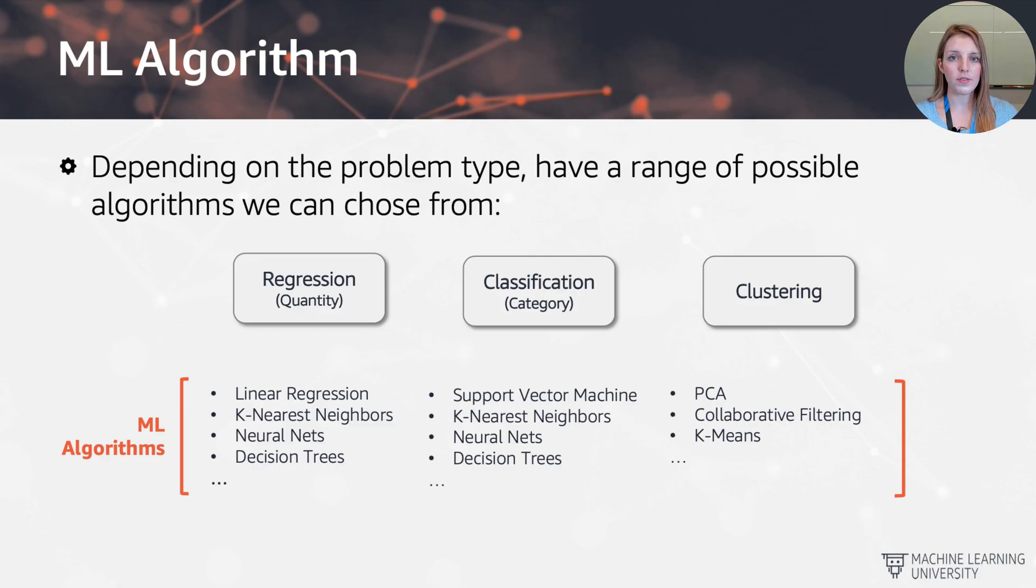And to remind ourselves again, the selection will ultimately come down to which type of machine learning problem that we want to solve. And we have here the main types of regression, classification, and clustering. And you can see here again, the list of all the different algorithms that we can actually choose from. And in fact, that list is much larger.